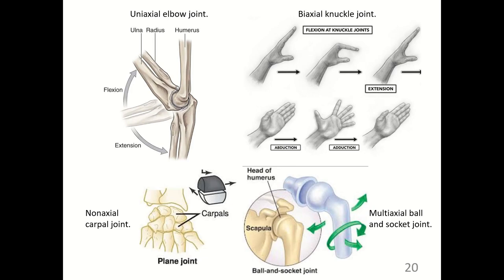This illustration shows the uniaxial elbow joint moving only in the sagittal plane for flexion and extension. The biaxial knuckle joint moves in two planes — the sagittal and transverse — performing extension and flexion as well as abduction and adduction. The plane joint between the carpals is a non-axial joint that just glides. The head of the humerus is a multiaxial ball and socket joint, moving in all planes in the process of circumduction, which is basically drawing a cone in space.